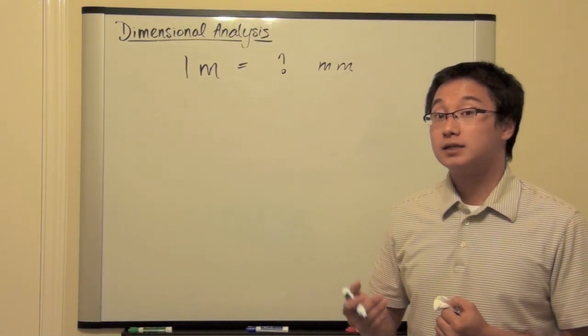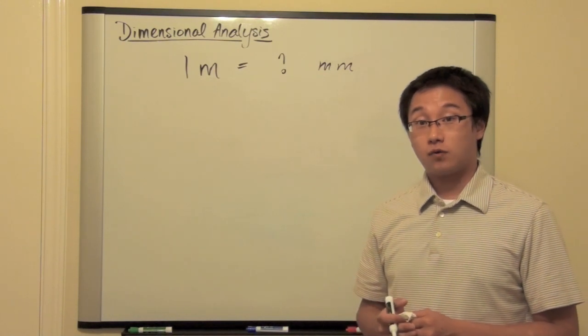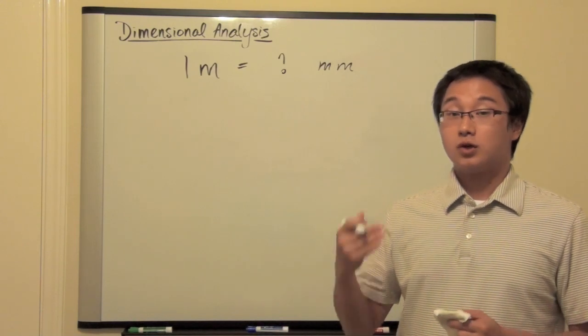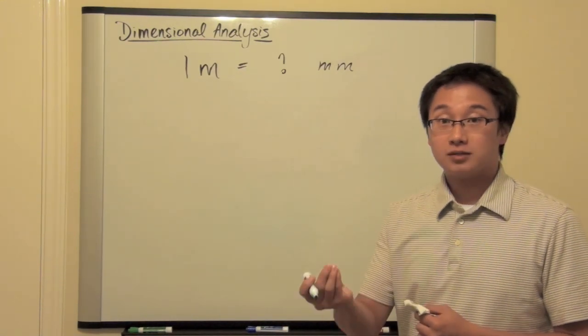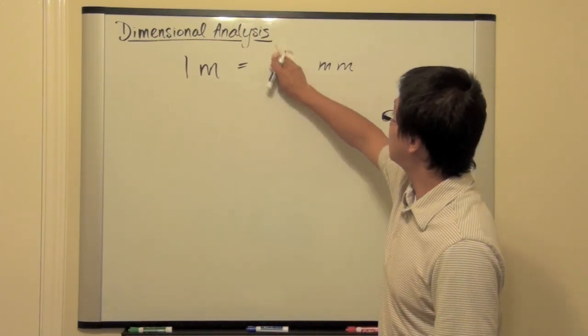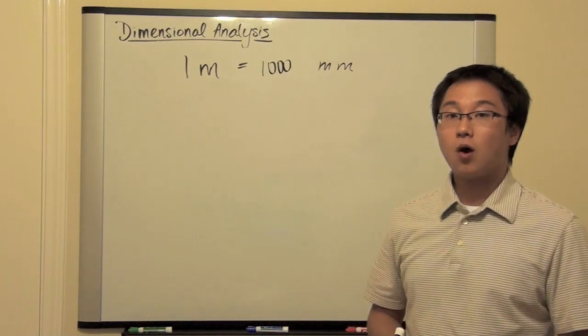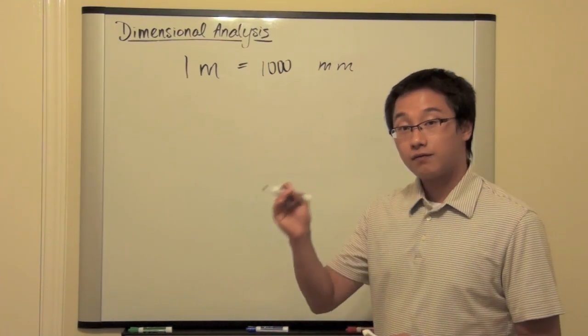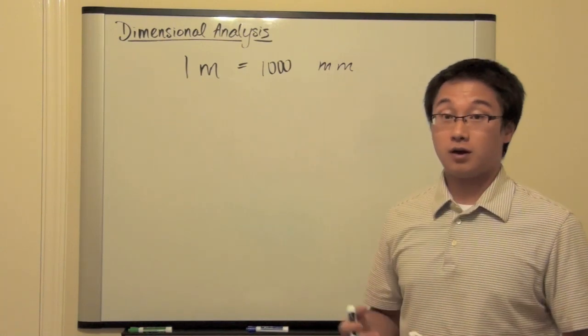And we understood the fact that milli, the small letter m, stands for 10 to the negative 3 power, or 1 over 1,000. So, by understanding the meaning of equal sign, the concept of equality, we figured out that this number should be 1,000. So, we are just using substitution, substituting 10 to the negative 3, or 1 over 1,000 into this milli, and we figure out the number.